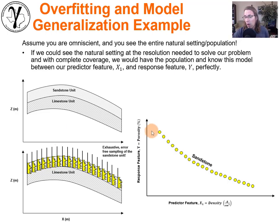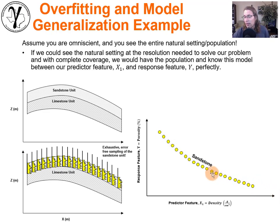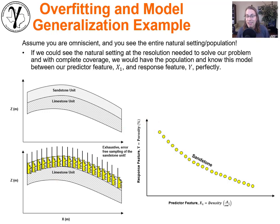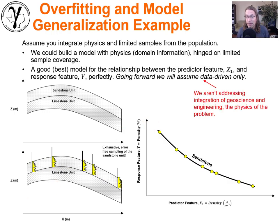Imagine billions or trillions of samples that just define this shape right here with perfect accuracy, no error. You would see that relationship. There'd be no need to model. Well, we don't have that. And that's where our troubles begin — instead we have a limited set of samples.